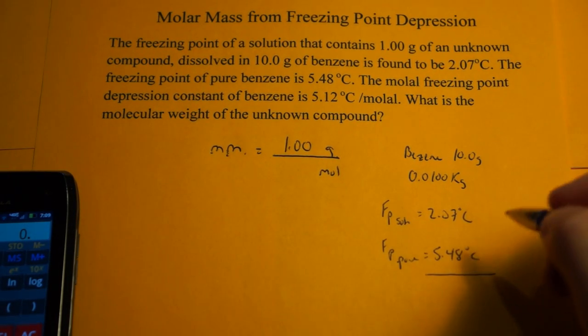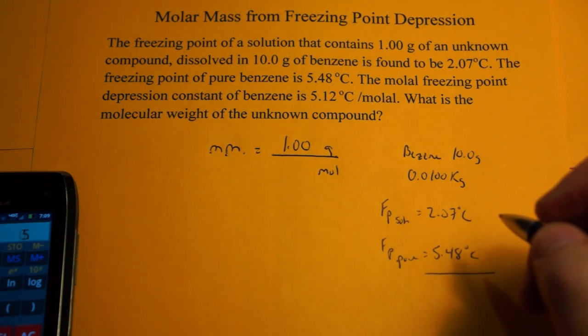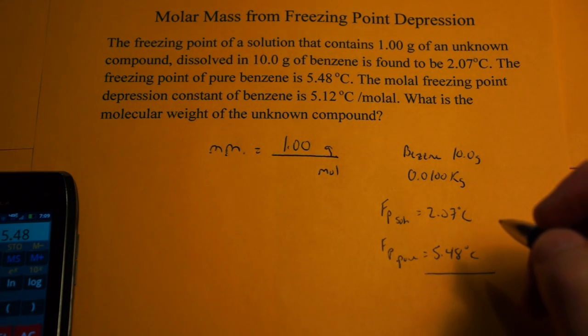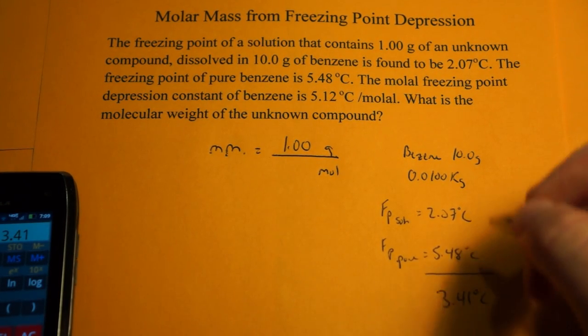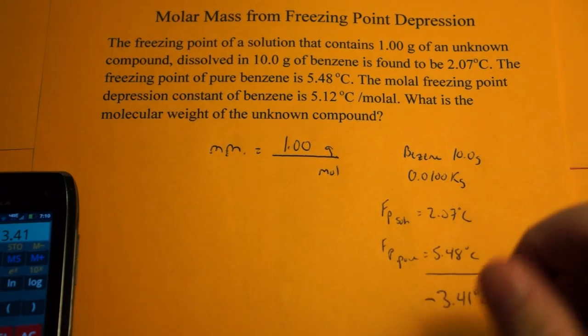So the difference right here, let's just plug that into our calculator, negative 5.48 and 2.07. The difference is 3.41 degrees Celsius, and actually that's a drop, so it's negative.